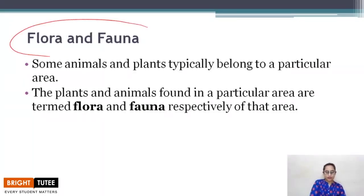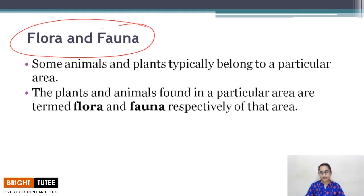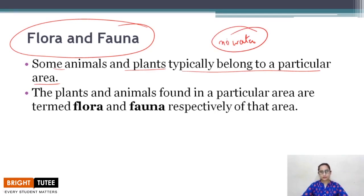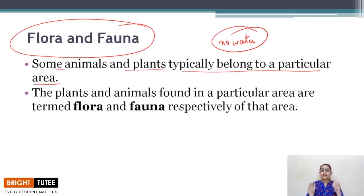Flora and fauna — these terms are very common and you must have heard them in science classes. Some animals and plants typically belong to a particular area. For example, cactus is only found in desert because it requires very little water and can survive heat waves and hot temperatures. Cactus is not found in mountains or plains with good vegetation.